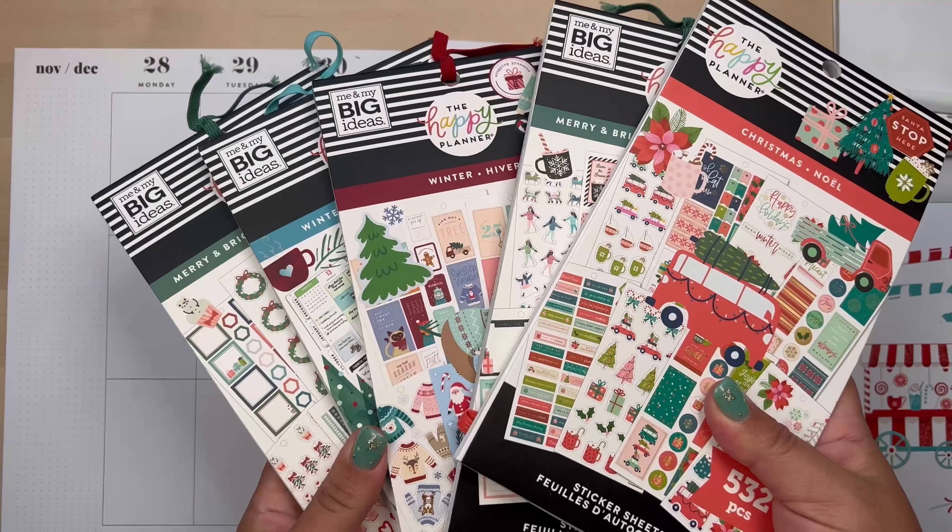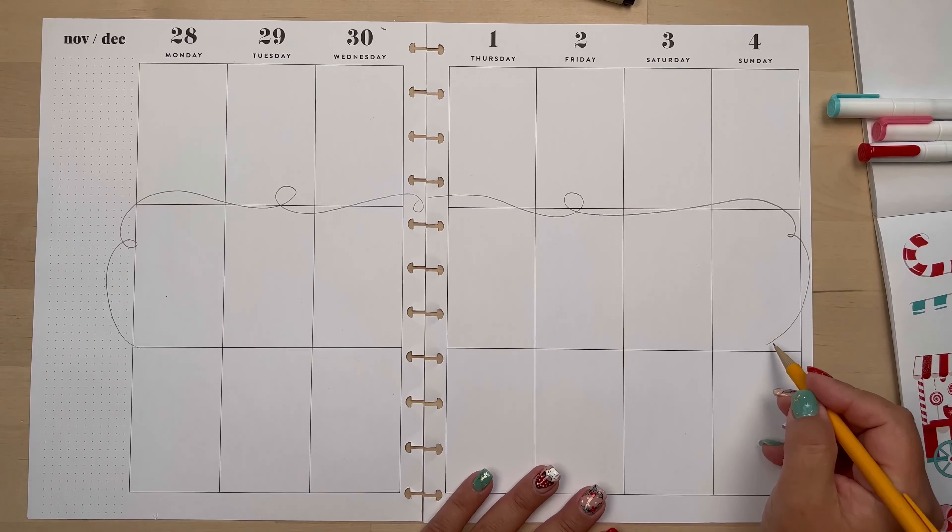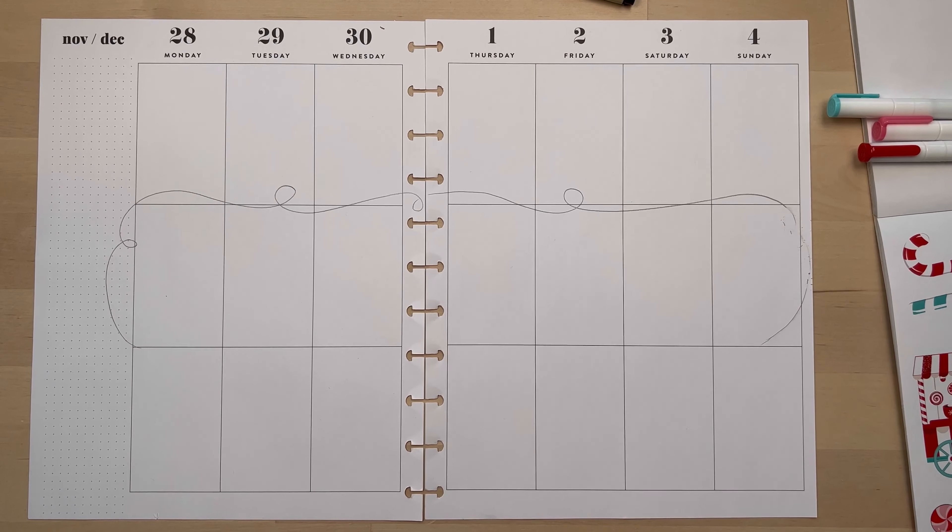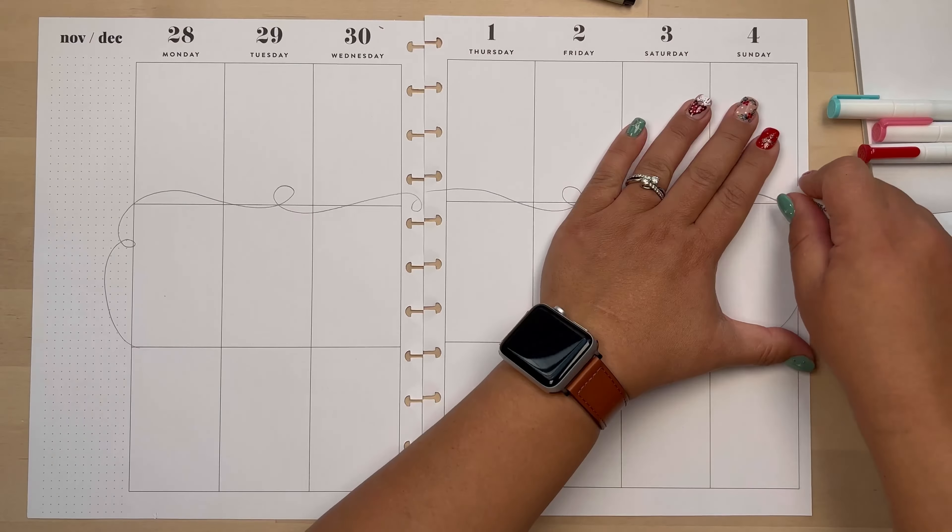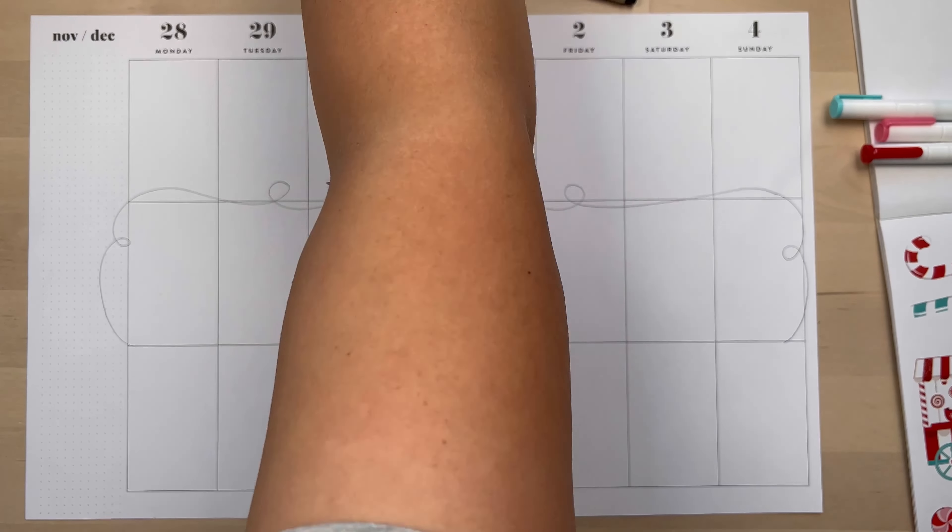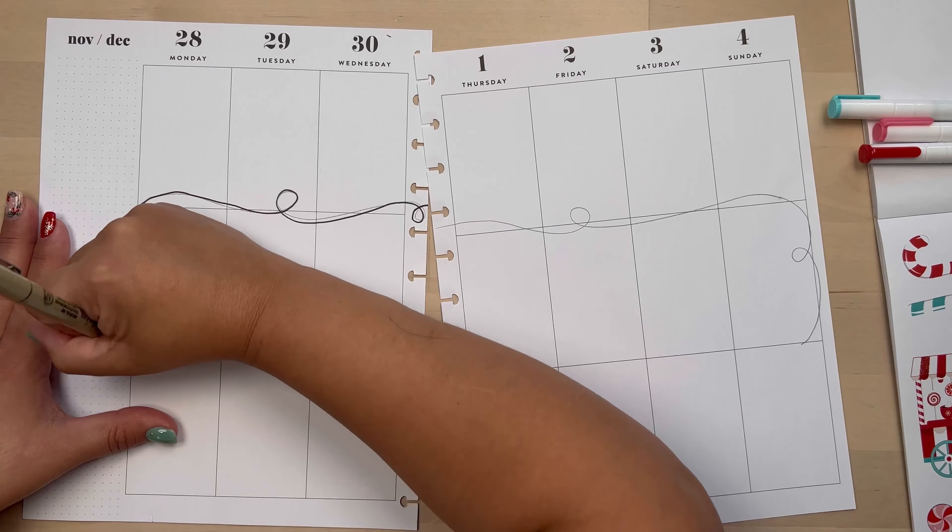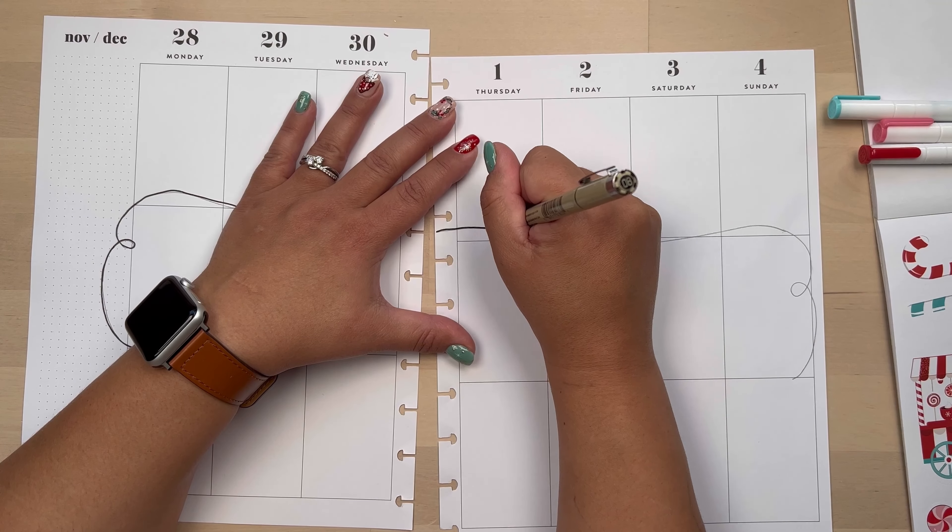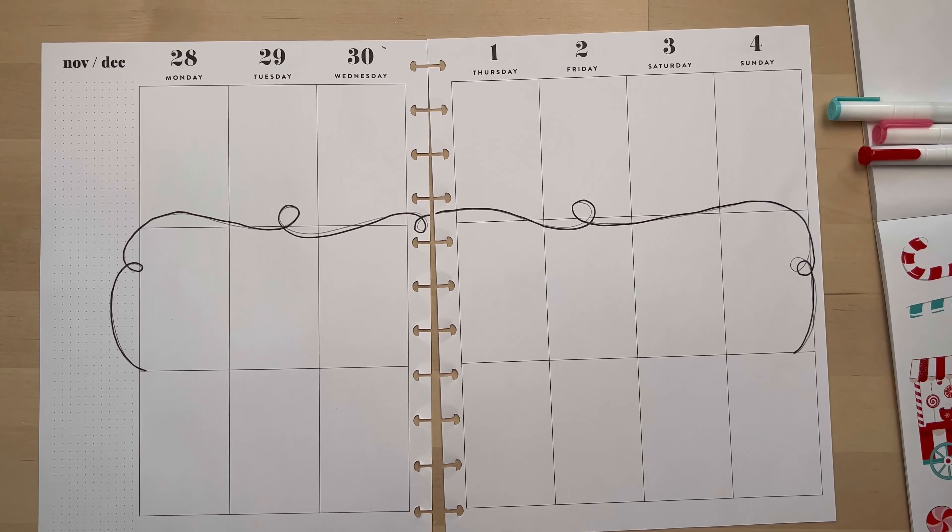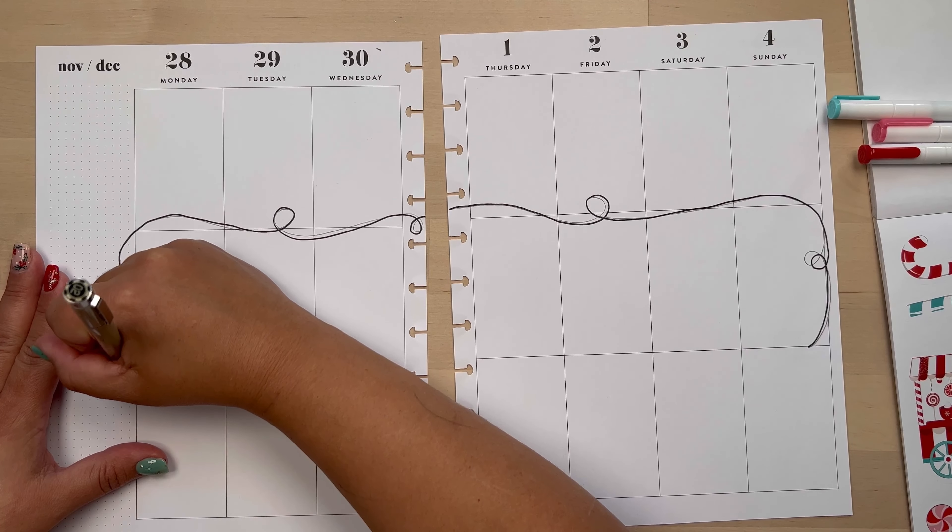I am going to use some washi and some Happy Planner stickers. I took out those acrylographs that match the stickers from Live Love Posh because I wanted to do my own Christmas lights on my page. This is the first time I'm ever doing this. I'm not a doodler or artist, I don't draw, but I thought this was cute and I was going to attempt it.